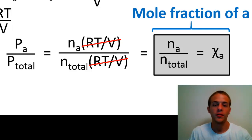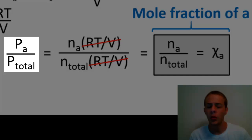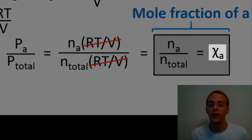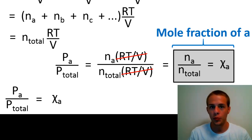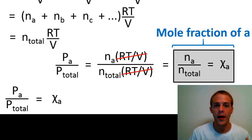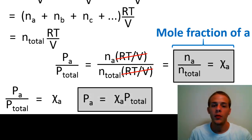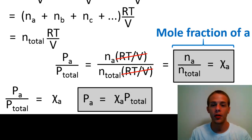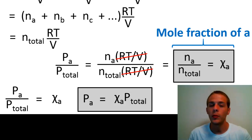The symbol for mole fraction is the Greek lowercase chi (χ). So χ_A equals moles of A divided by the total moles of all gases in the container. We can equate P_A over P_total to χ_A, and multiplying both sides by the total pressure gives us: partial pressure of A equals the mole fraction of A times the total pressure. So if you know the moles of A, total moles, and total pressure, you can easily find the partial pressure of A.